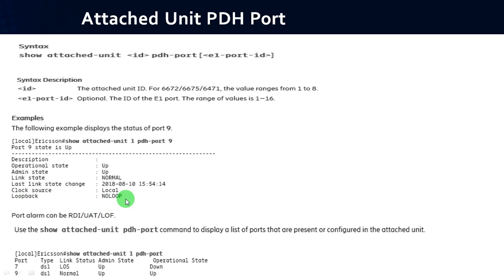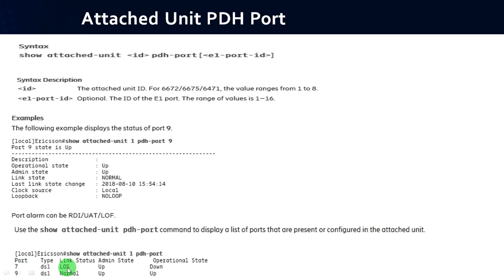The PDH port may show alarms such as RDI (Remote Defect Indication), UAS (Unavailable Seconds), and LOF (Loss of Frame). The show attached-unit pdh-port command displays the list of ports configured in the attached unit. For example: port 7 shows link status LOS (Loss of Signal) and operational status down; port 9 shows link status normal and operational status up. Admin status is up for both ports.